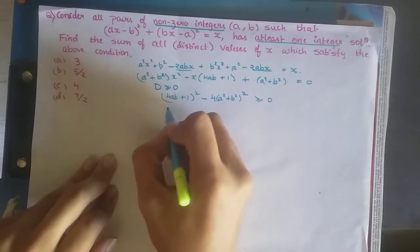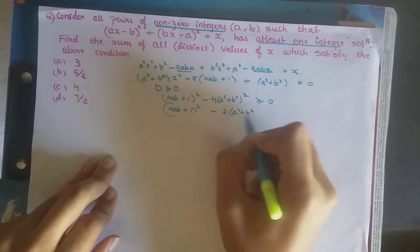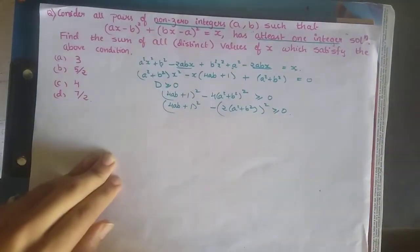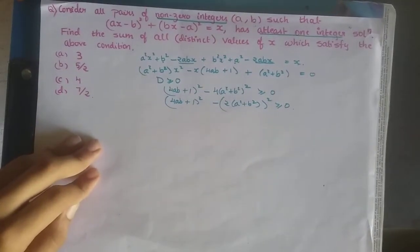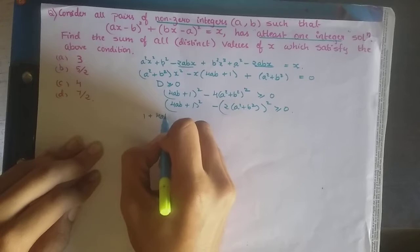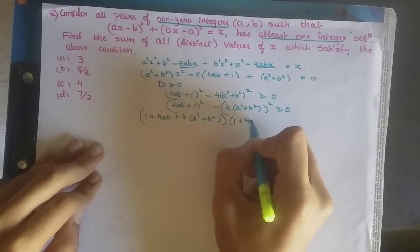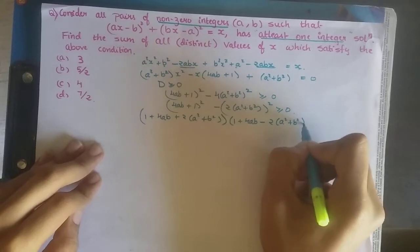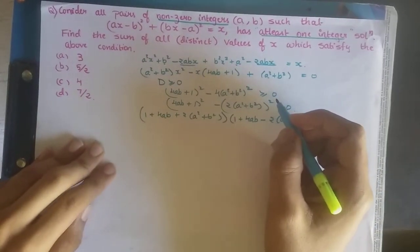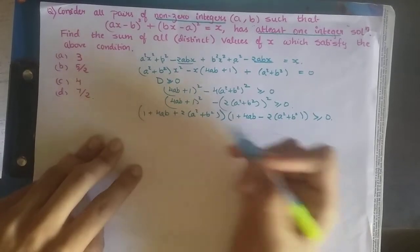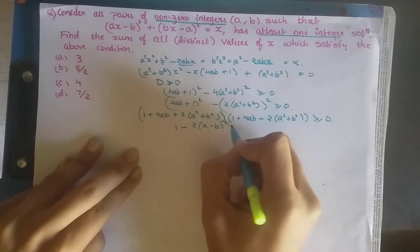I can rewrite this as (4ab + 1)² − [2(a² + b²)]², which is of the form A² − B². Factoring: [1 + 4ab + 2(a² + b²)][1 + 4ab − 2(a² + b²)] ≥ 0. Simplifying further, this reduces to 1 − 2(a − b)² ≥ 0.